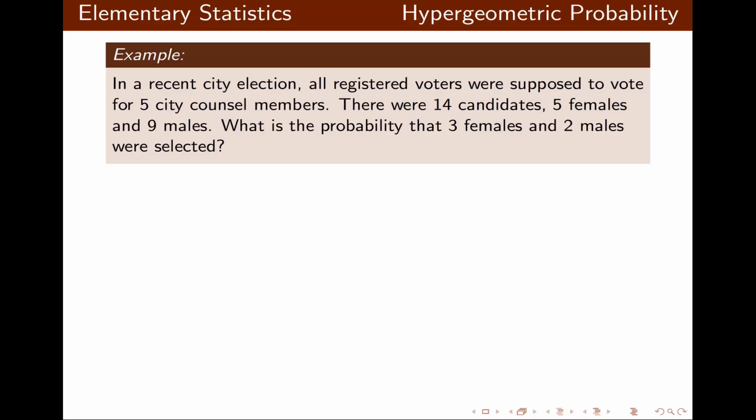In this example, all registered voters are supposed to vote for five city council members. There are 14 candidates — five females and nine males. We want to find the probability of selecting three females and two males.